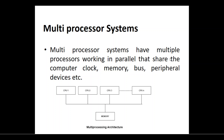Multiprocessor systems have multiple processors working in parallel that share the computer clock, memory, bus, and peripheral devices. Instead of a single processor, multiprocessor systems have multiple processors parallelly working — not individually, but by sharing resources. You can have 1, 2, 3, up to N numbers of CPUs connected together, sharing resources and providing services.